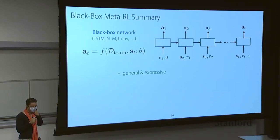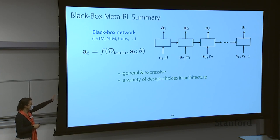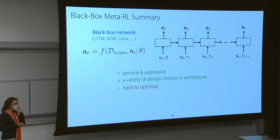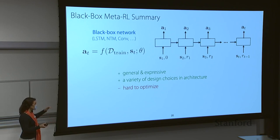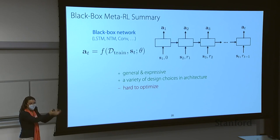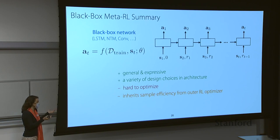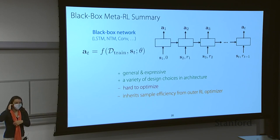To summarize black box meta-RL: these methods are quite general and expressive, with a variety of architecture design choices. They're generally easy to combine with different RL optimizers — you can optimize behavior with respect to a Bellman error objective like Q-learning or with policy gradients. They tend to be somewhat difficult to optimize, especially with recurrent networks requiring backpropagation through long sequences. In black box meta-learning, you're learning how to learn from scratch without building structure into the meta-learner, which also makes optimization harder. Data efficiency is inherited from the outer RL optimizer — policy gradients will be very data inefficient, while value-based RL will be more efficient.